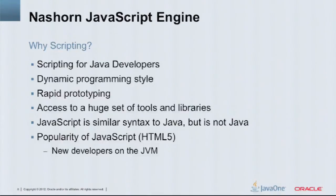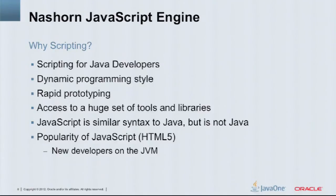Why would we want to do JavaScript or scripting at all? We find there are a lot of tasks or applications where scripting seems more appropriate than doing a full implementation in a higher-level language like Java. It has a dynamic style — you can prototype things fairly quickly. It's a lot easier to develop something in JavaScript than to start the whole process of developing a Java program. What this JavaScript does that others don't is give you direct access to the rich Java libraries out there — a huge number of Java stacks covering networking, embedded systems, and more.